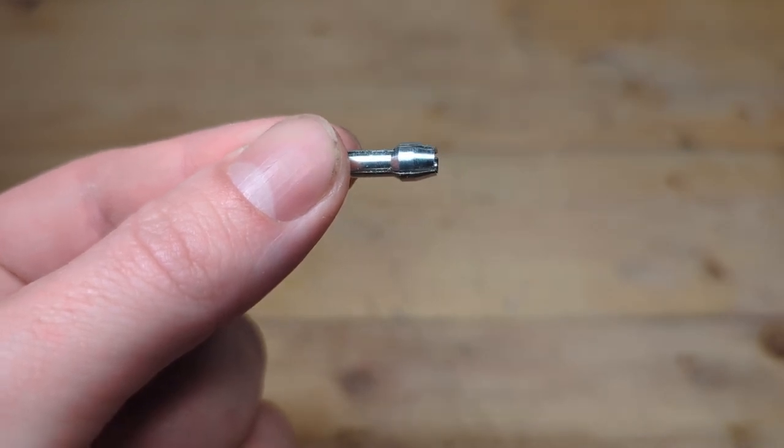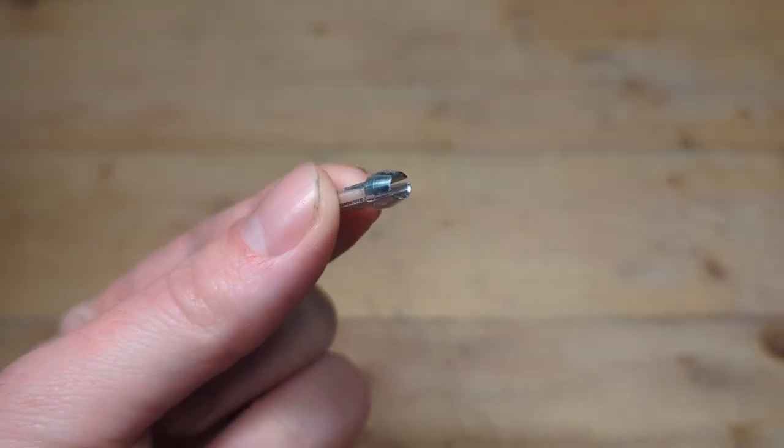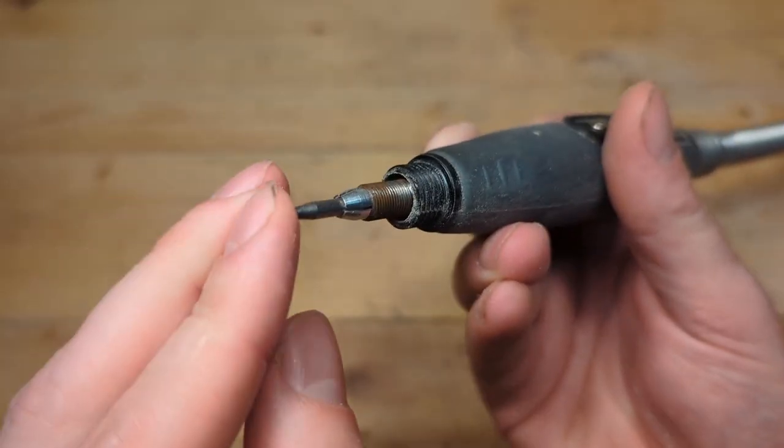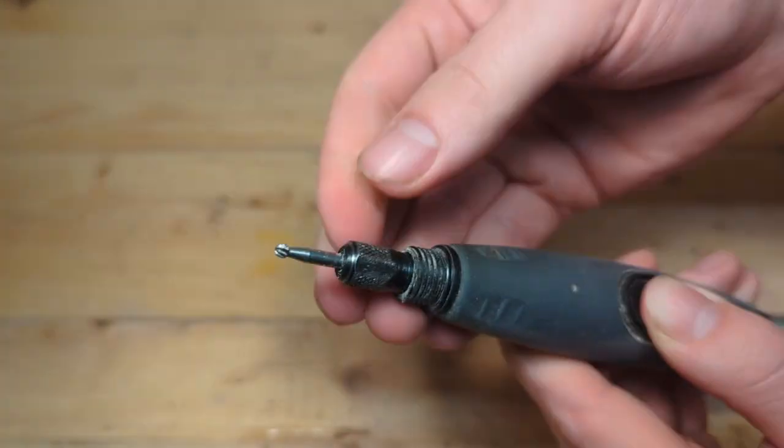This is a collet for a rotary tool. The function of a collet is to secure the bit to the Dremel. It sits inside the spindle and it clamps the bit when you tighten the collet nut.